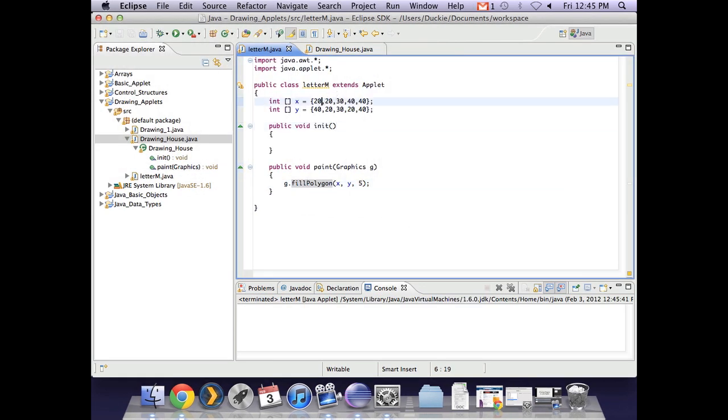So remember that when we line them up like this, the 20, 40 is the first point in my letter M. The 20, 20 is the second point, which is the top left corner of my M. The 30, 30 is that middle low point of the M.